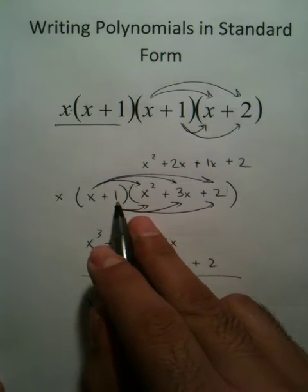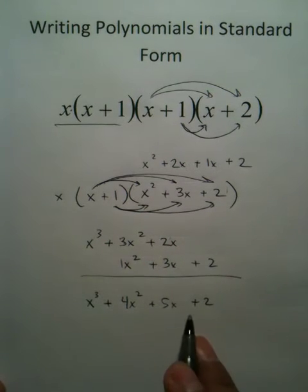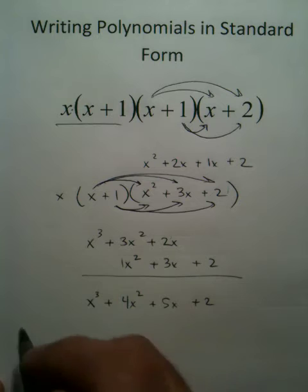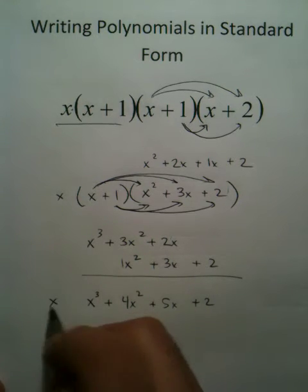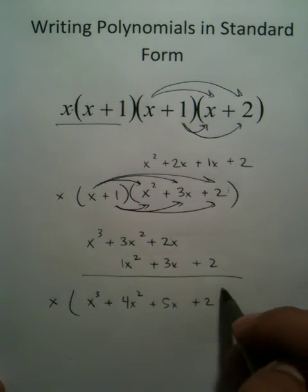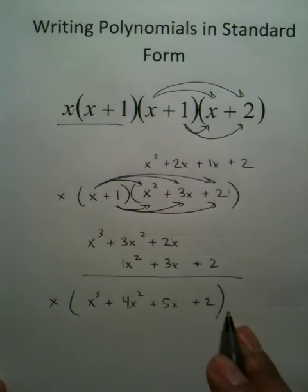So, this binomial and this trinomial turned into this polynomial with four terms. We still have this x in the very front, and that gets multiplied by every single thing inside there as well.